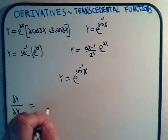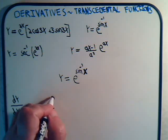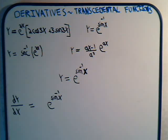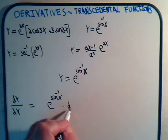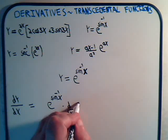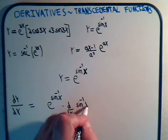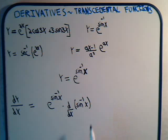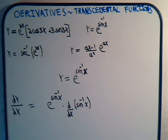So dy/dx equals e to the inverse sine of x times d/dx of the inverse sine of x. We should remember that the derivative of arcsin of x is 1 over the square root of 1 minus x squared, times the derivative of x with respect to x, which is just 1.